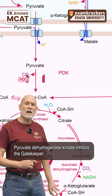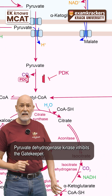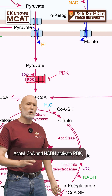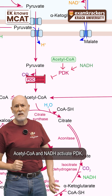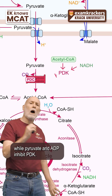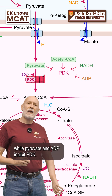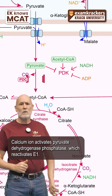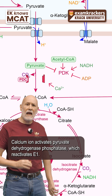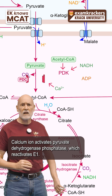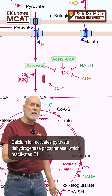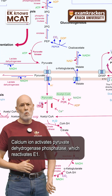Pyruvate dehydrogenase kinase inhibits the gatekeeper. Acetyl-CoA and NADH activate PDK, while pyruvate and ADP inhibit PDK. Calcium ion activates pyruvate dehydrogenase phosphatase, which reactivates E1.